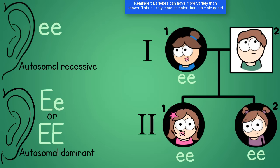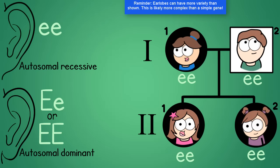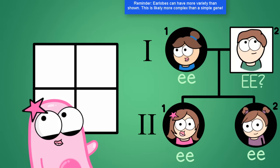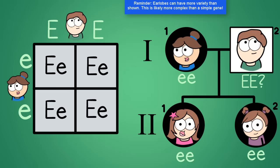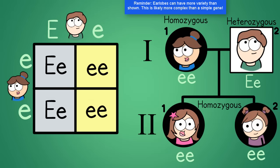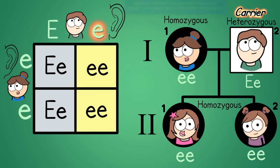Any capital dominant letter and the individual would have to have free earlobes and not be shaded. Let's look at individual two in the first generation—that's our father. He's not shaded, so he can't be little e, little e. What about big E, big E? Well, there's a problem. Each child must get an allele from each parent. So if I received a little e from my mom, then I had to get the other little e from my dad. Therefore, he can't be big E, big E or he'd have no little e to give. His genotype must be the heterozygous genotype, big E, little e. He's what we call a carrier—he still has a phenotype of free earlobes because of that one capital, but he carries the lowercase allele.